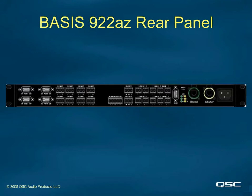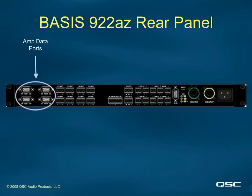The rear of the Basis is where all the connectivity takes place — audio connectors, data port connectors, and discrete I/O connections, in addition to network connections. Data ports connect the Basis to QSC amplifiers through special QSC data port cables. This includes all models of CX, PowerLite, PowerLite 2, PowerLite 3, and DCA amps built to date, representing the widest range of amplifier models that can be computer controlled of any amp manufacturer in the industry. These connectors appear to be VGA connectors at first glance and are similar to HD15 VGA connectors, but that is where the similarity ends — data ports carry audio, not video signals.